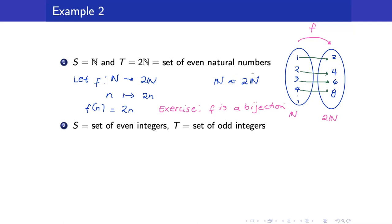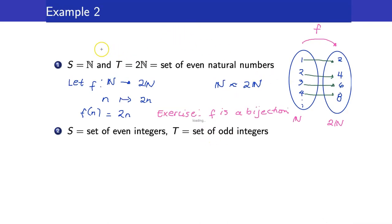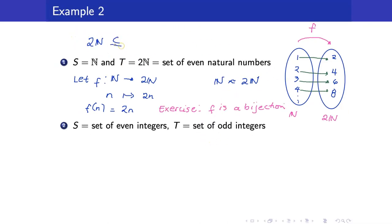When we say that two sets are equivalent, that is equivalent to saying they have the same size. We all know that 2N is a proper subset of N; however, they are equivalent. This is the proof — we were able to find a bijection from the set of natural numbers to the set of even natural numbers.